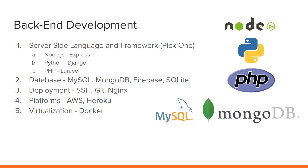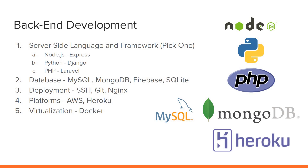Next you'll want to learn deployment: how to SSH into the server, how to use git to transfer files, and how to work within Nginx, which is software on the server. There are also different platforms like AWS and Heroku. AWS is usually overkill for starting out — it's for bigger projects — so you'll probably want to learn Heroku. Then there's virtualization: Docker helps you set up a container with your environment so you can share it with other developers so that everything is identical.